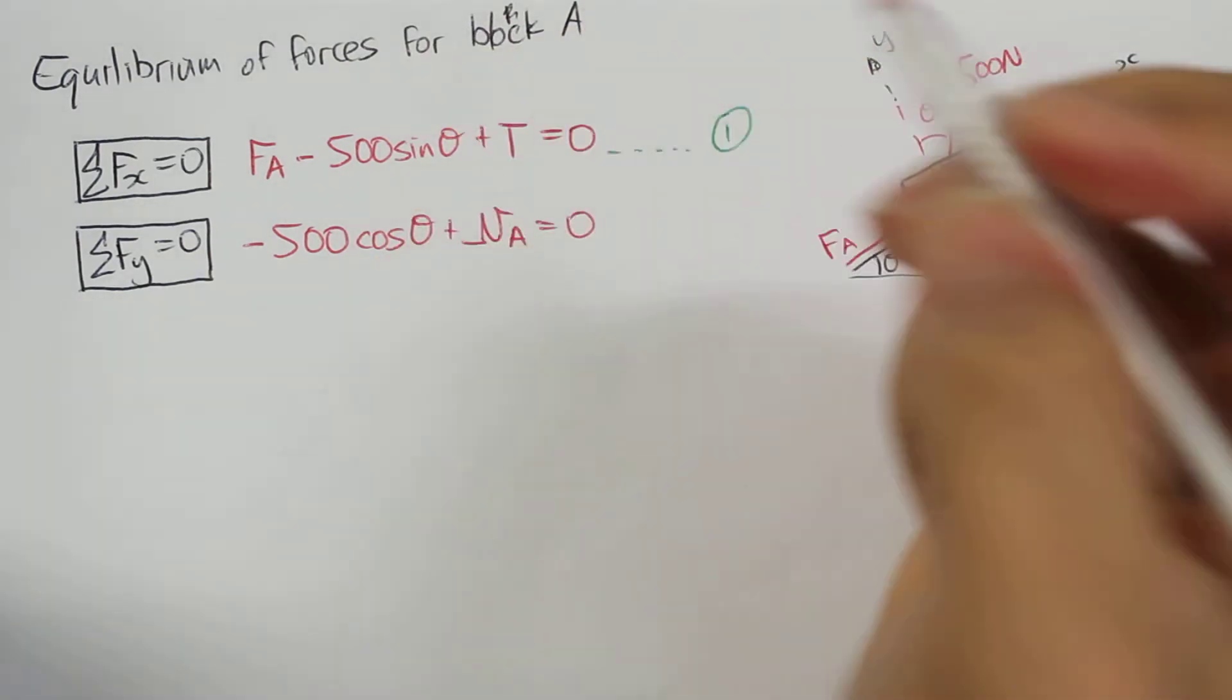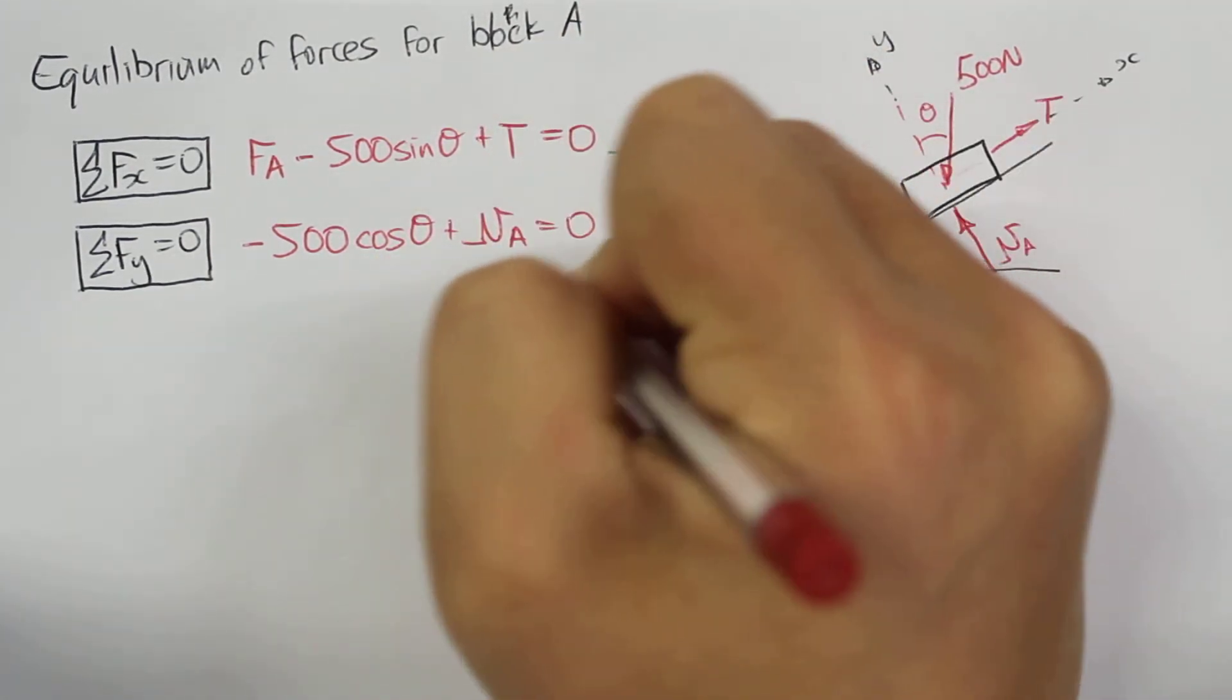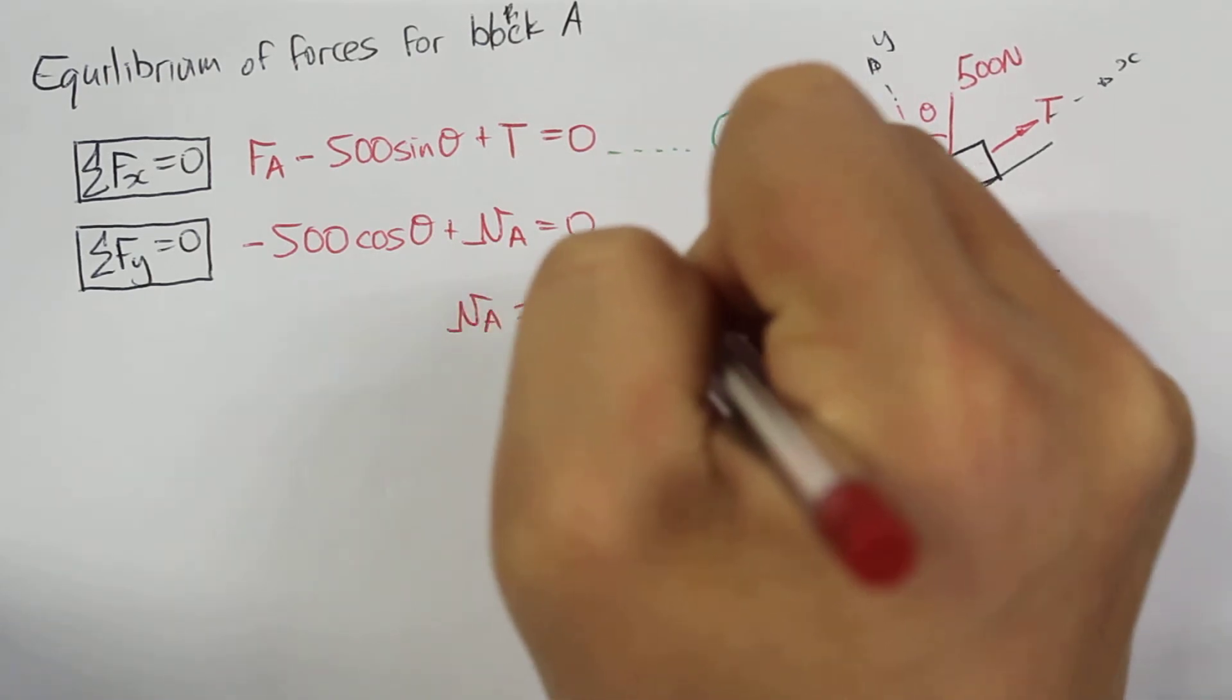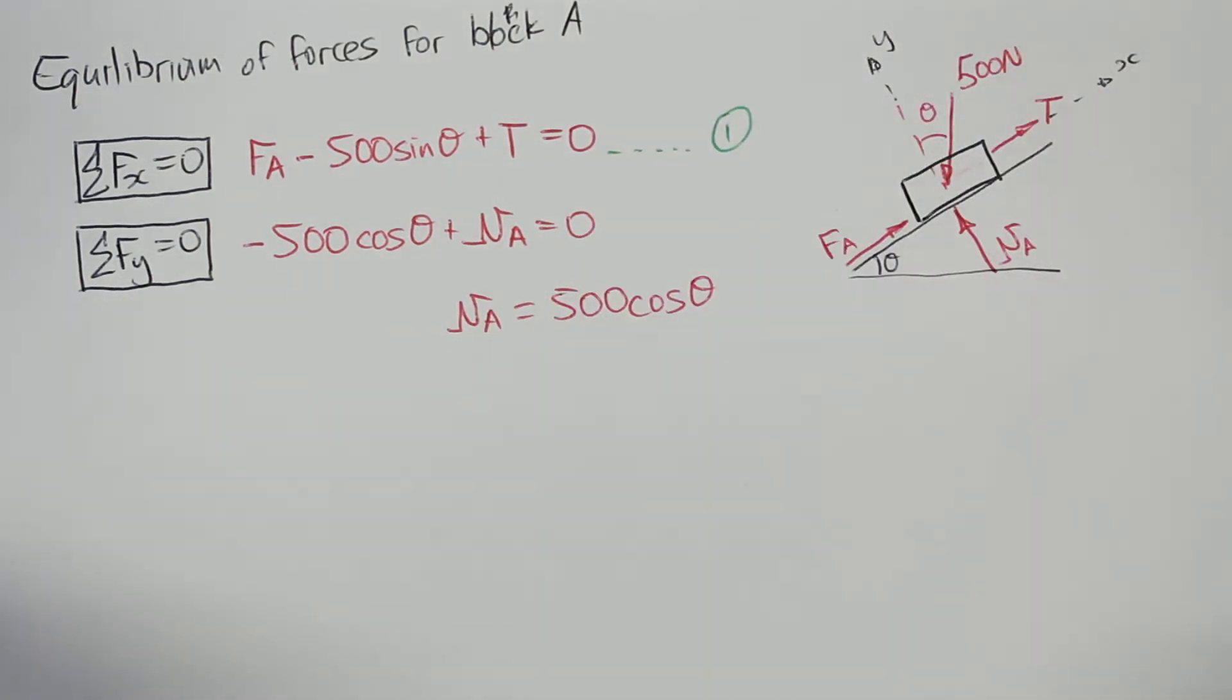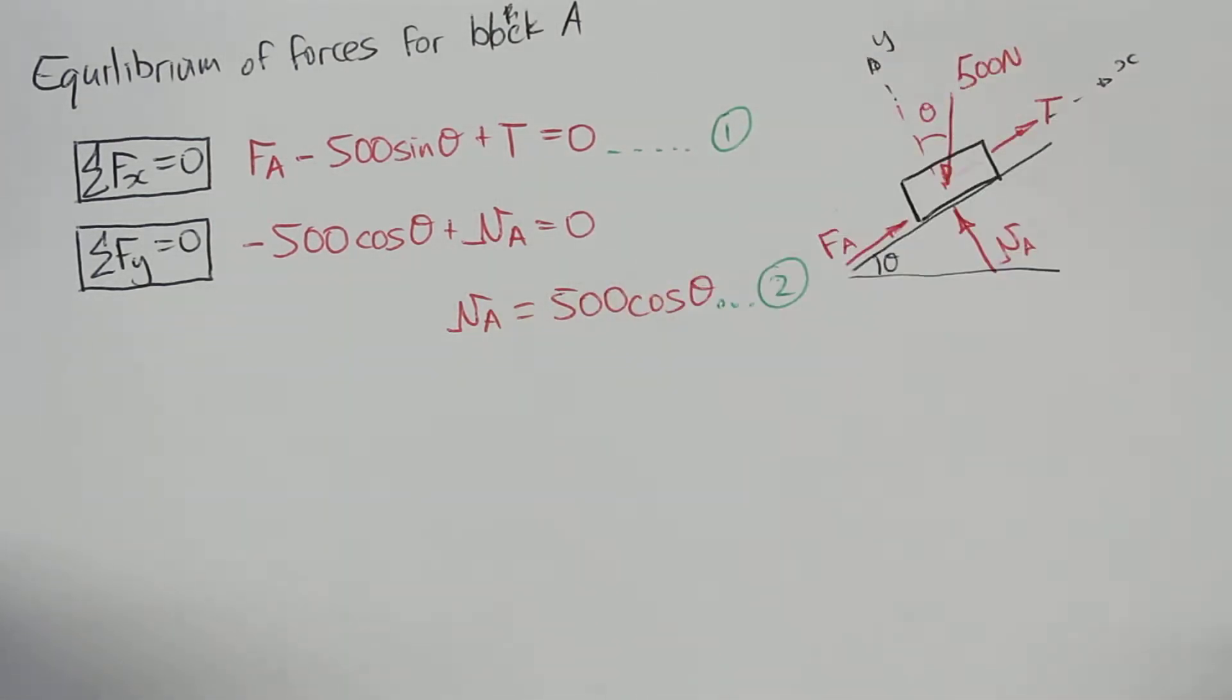We can rearrange this, and that will become Na equal to 500 times cosine theta. And that's number 2.